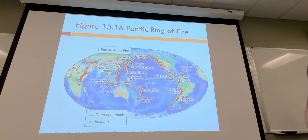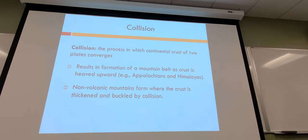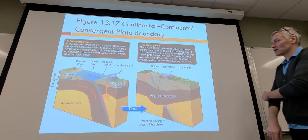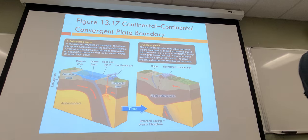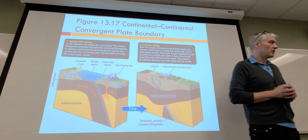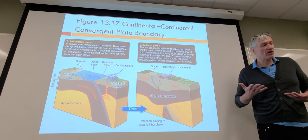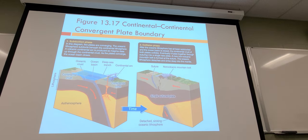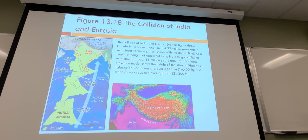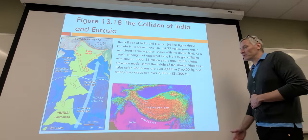Collision is when two plates smash together, usually creating mountains. These are non-volcanic because they're pushed up from tectonic forces, and the collision isn't hot enough to generate volcanoes — at least not usually. The Rocky Mountains aren't particularly volcanic, the Tibetan Plateau isn't particularly volcanic. Plenty of mountains are just a product of continents coming together and pushing up land. The biggest example is India pushing up the Tibetan Plateau.